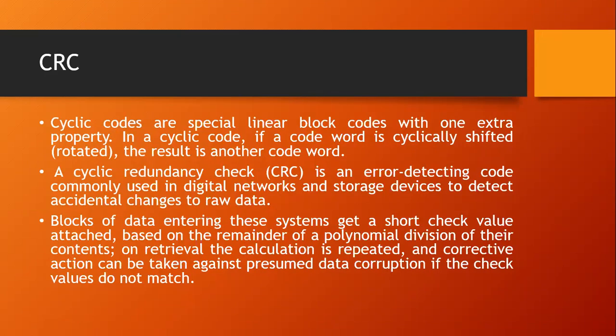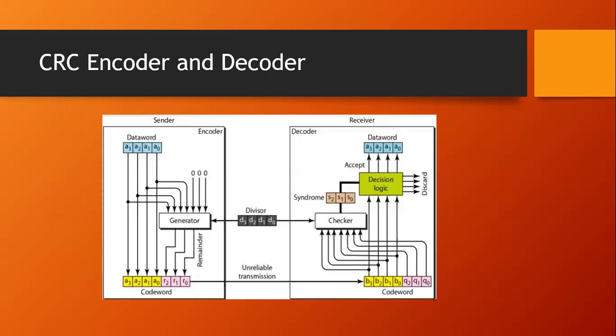In CRC, we append or augment some extra bits to detect errors. Here you can see the CRC encoder and the decoder. On the left hand side, you can see the CRC encoder which works at the sender side. The data word has four bits: A3, A2, A1, and A0. This data word is passed to the generator, which is also provided with a four-bit divisor: D3, D2, D1, and D0.